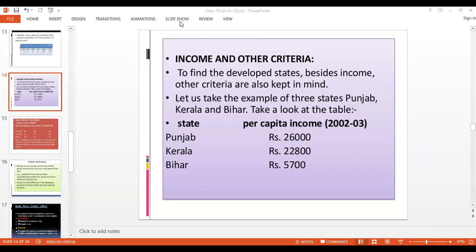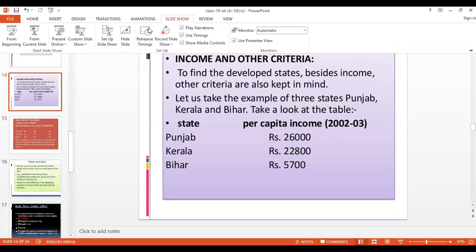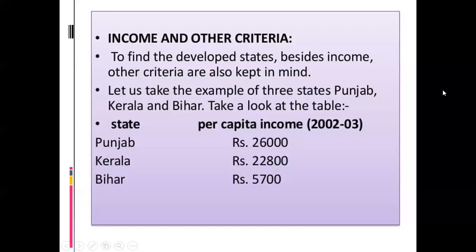For a better understanding, please look at the table on which three states and their per capita income have been given. The states are Punjab, Kerala, and Bihar — three states having three different per capita income figures. Which state has the highest per capita income? That is Punjab, with 26,000 rupees.